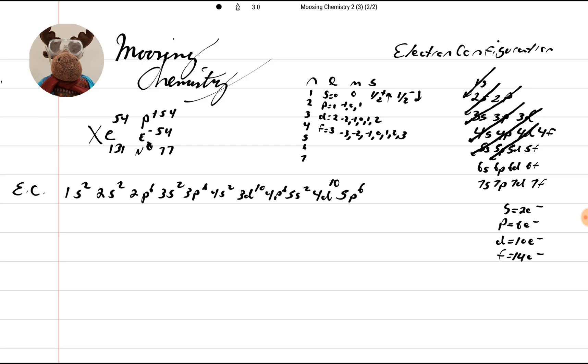Okay. So that's the electron configuration. We don't go to the 6S because we ran out of electrons. All right. Now let's do our orbital notation. That's Hund's rule.